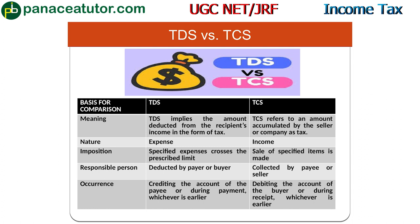Now let's look at the differentiation between TDS and TCS. In terms of meaning, nature: TDS is an expense, TCS is income. For imposition: TDS applies when specified expenses cross the prescribed limit; TCS applies when a sale of specified items is made — the seller and buyer transact, payment is made, and TCS is deducted simultaneously.